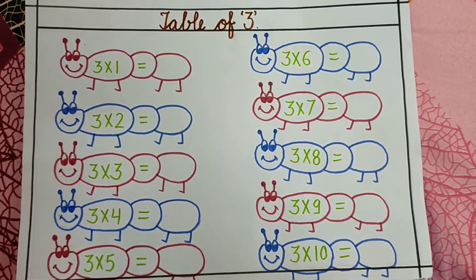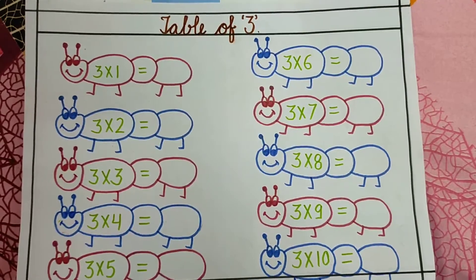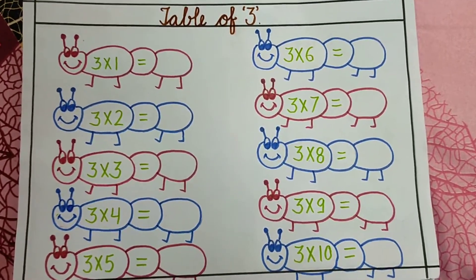Good morning, children. How are you all? I hope you all are doing very well. So, what are we going to do today? Table of 3. We will do the table of 3.